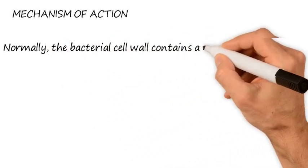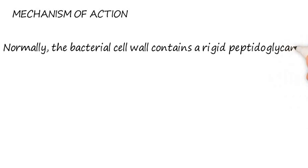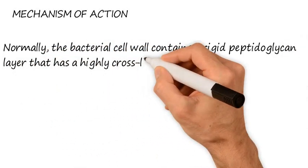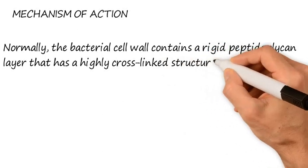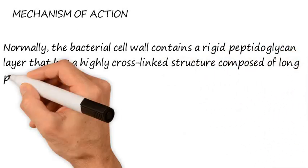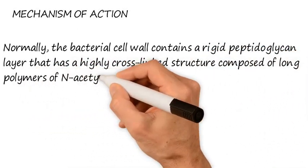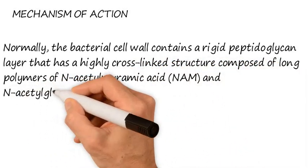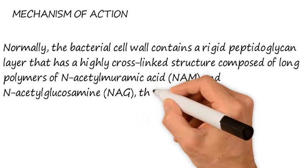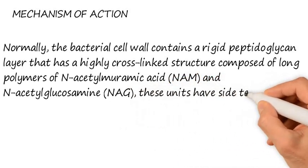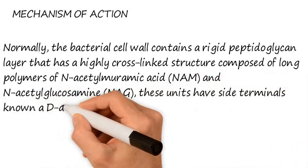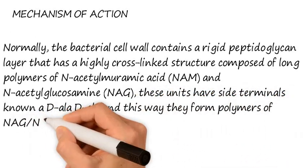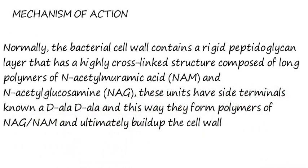Normally, bacterial cell wall contains a rigid peptidoglycan layer that has a highly cross-linked structure composed of long polymers of N-acetyl muramic acid (NAM) and N-acetyl glucosamine (NAG). These units have side terminals known as D-alanyl-D-alanine, and in this way they form the polymers of NAG and NAM and ultimately build up the cell wall.